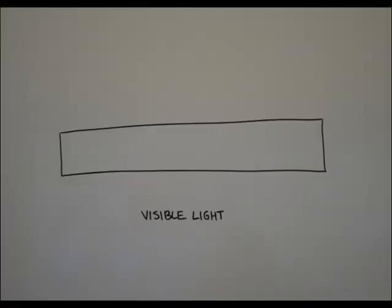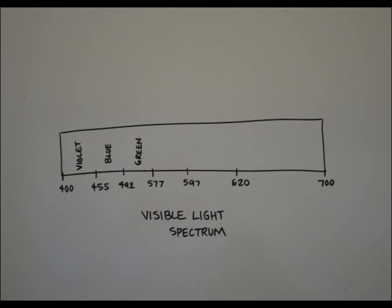Light moves like a wave, and waves come in many sizes. Different sized light waves show up in different colors. In fact, visible light includes every color of the rainbow. Shorter waves look violet, while longer waves look red.